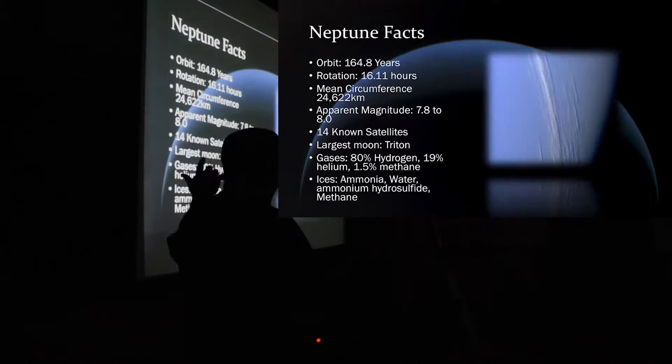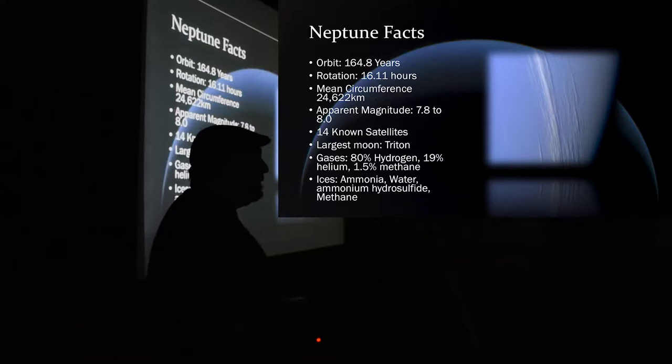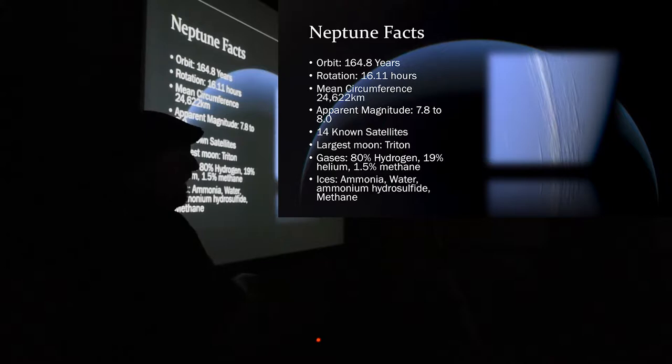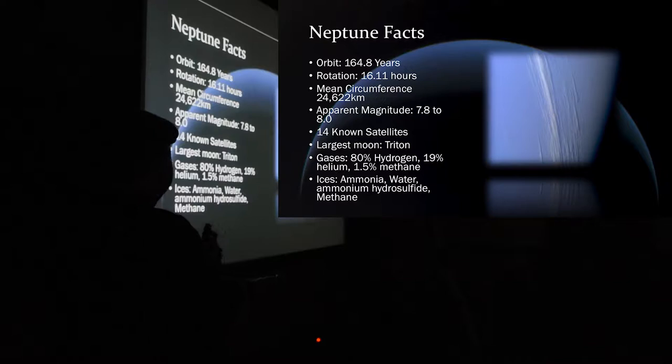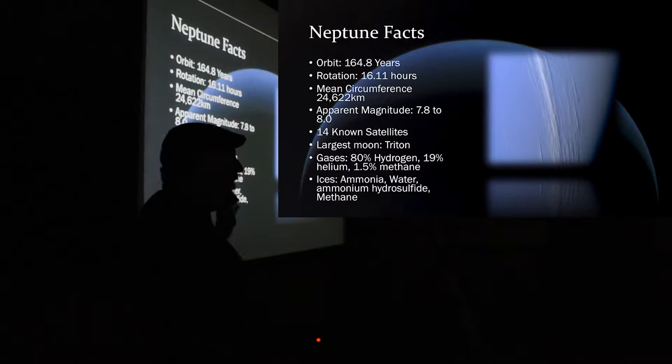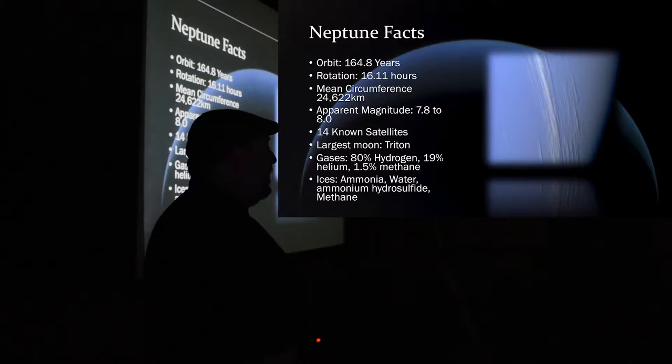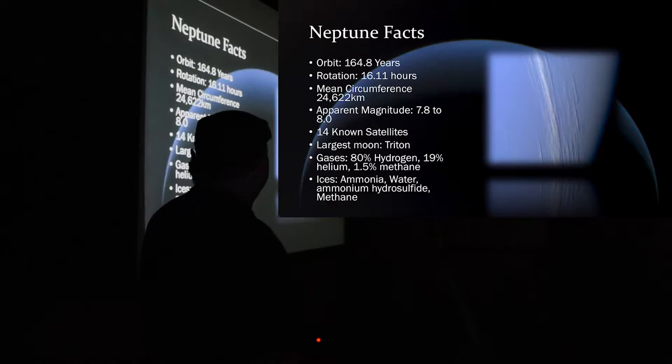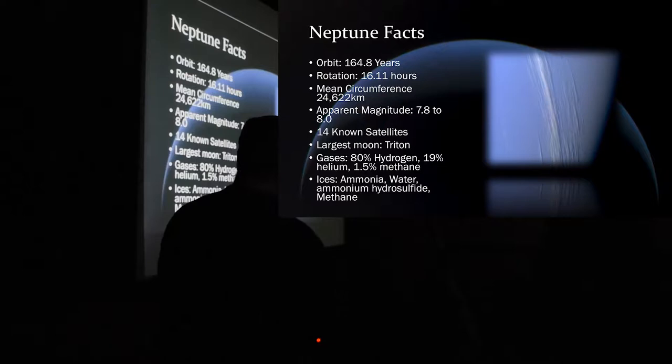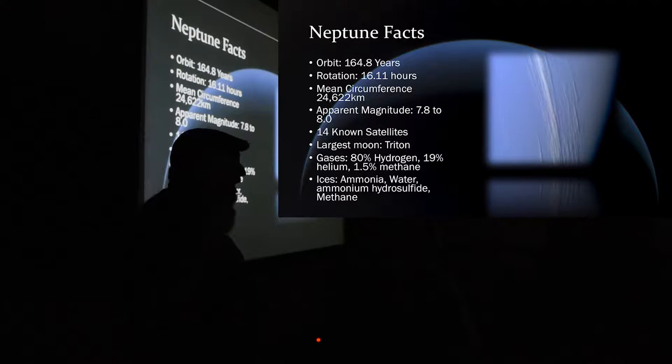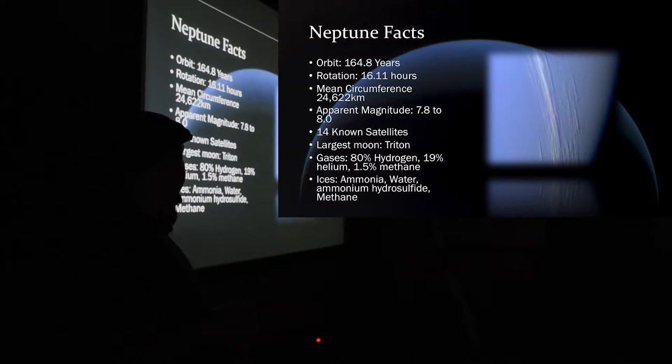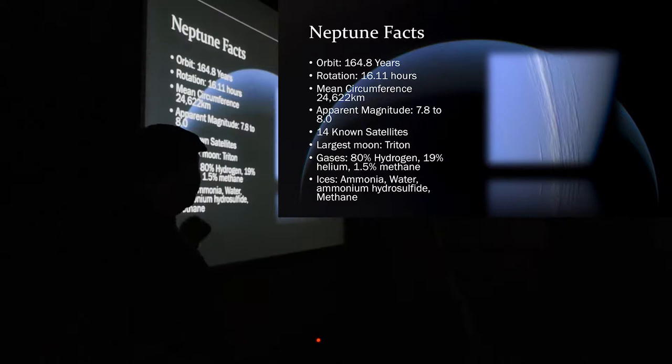The planet. One year on Neptune is 164.8 Earth years. It spins at 16.11 hours, one rotation. It is, I might get this wrong, it is smaller than Uranus, but it's more massive than Uranus. It's 7.8 to 8.0, so you cannot see it with your naked eye. Uranus, you can see it with the naked eye, but it's very difficult. I've seen it before, but it's not very bright. So, Neptune, you cannot see unless you're using a telescope. I have seen Neptune several times. It's fun to look at. It looks like a little pale, blue-ish-green dot. It has 14 known satellites, and its largest satellite is the Moon Triton. It's mostly made up of hydrogen, helium, and methane, and the ices involved are ammonia water.